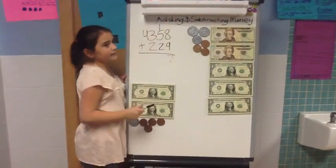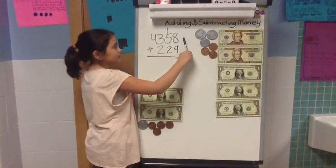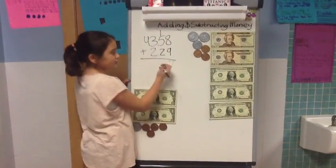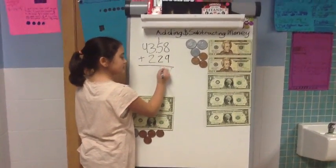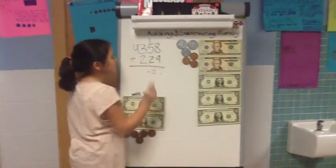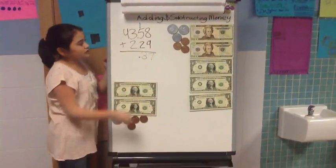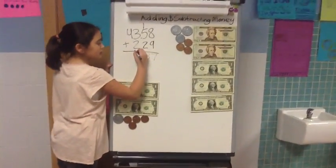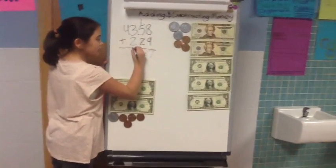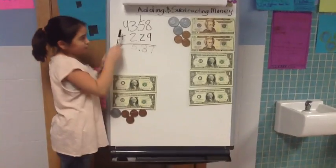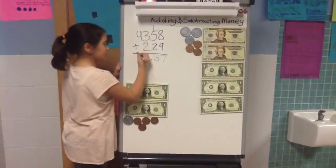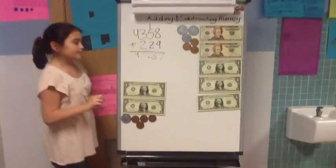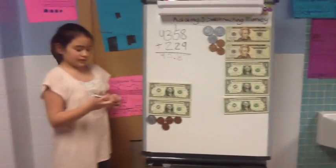We bring the one up. Then you do 5 plus 2, which equals 7, plus 1 carried, which equals 8. Bring down your decimal. Then you have $3 plus $2, which equals $5. Then you have $40 plus $0, which equals $45. And that's our answer from the algorithm: $45.87.